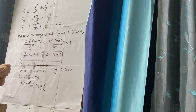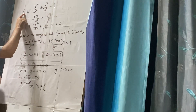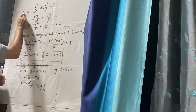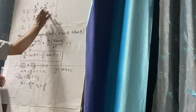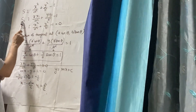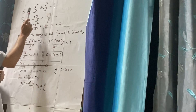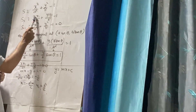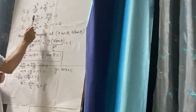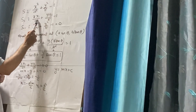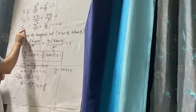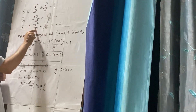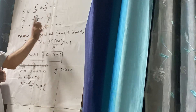Now understand the technology we discussed earlier. For an ellipse, S equals 0 is the equation of the ellipse, where S stands for x² by a² plus y² by b² minus 1. Remember to write S1 and S11. S1 is: x·x1 by a² plus y·y1 by b² minus 1. And S11 is: x1² by a² plus y1² by b² minus 1.